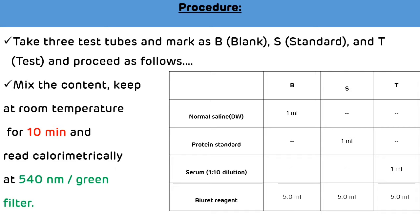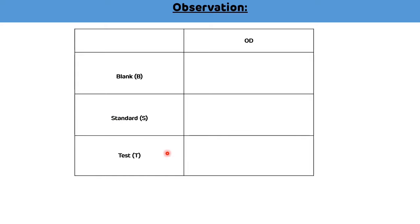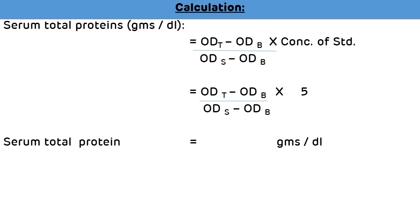After 10 minutes incubation, read colorimetrically at 540 nm wavelength. Enter the optical density of blank, standard, and test into the observation table. Then calculate serum total protein in g/dL using the formula: (OD of test − OD of blank) ÷ (OD of standard − OD of blank) × concentration of standard. Concentration of standard is 5 g/dL.